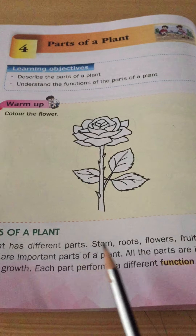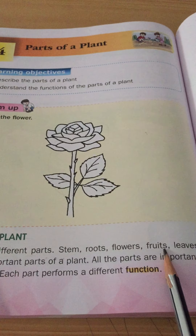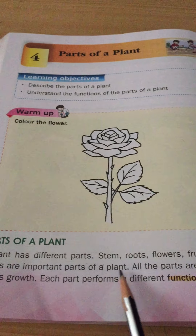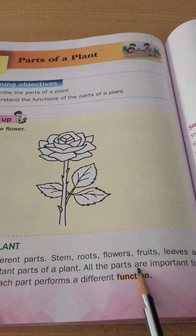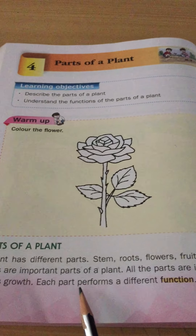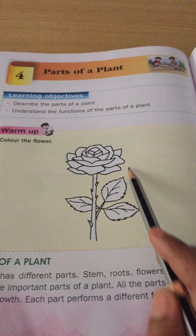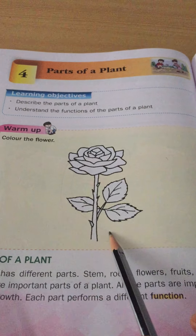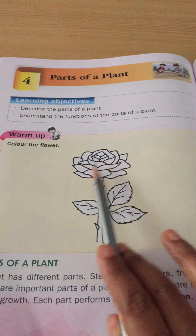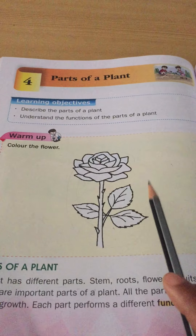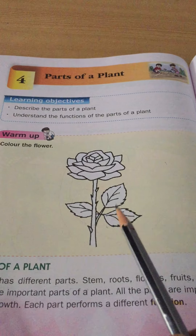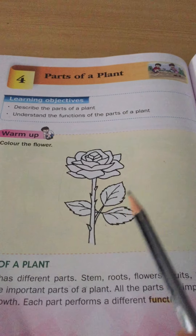A plant has different parts. Stem, root, flowers, fruits, leaves and seeds are important parts of a plant. All parts are important for plant's growth. Each part performs different functions. Different parts of a plant have different functions, and all the functions together help a plant to grow.